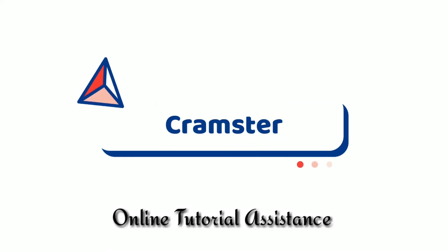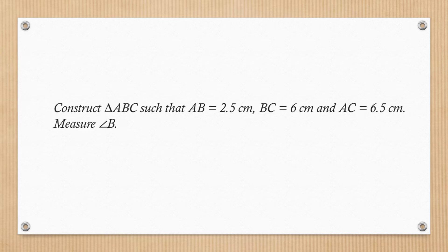Dear students, welcome to Cranster. Construct triangle ABC such that AB equals 2.5 cm, BC equals 6 cm, and AC equals 6.5 cm. Measure angle B.